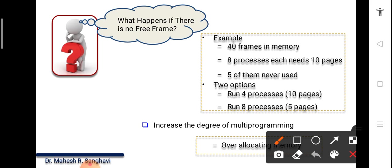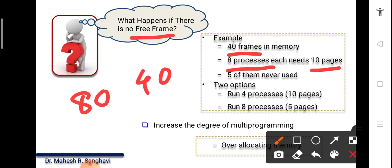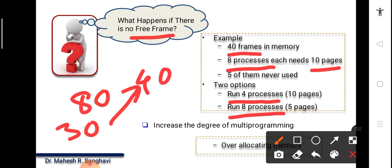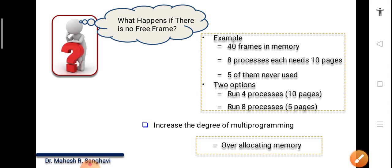What happens if there is no free frame? For example, 40 frames are in memory and 8 processes each need 10 pages — that's 80 needed but only 40 available. If five of them never use all pages, we ultimately need only 30 and have 40 available. So we can run four processes with 10 pages each (using 40 frames), or eight processes with 5 pages each (also using 40 frames). This way we can increase the degree of multiprogramming using over-allocation of memory.